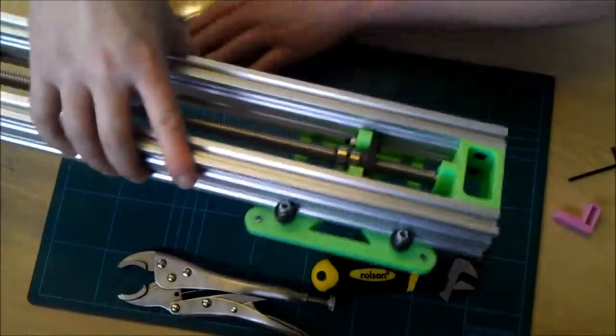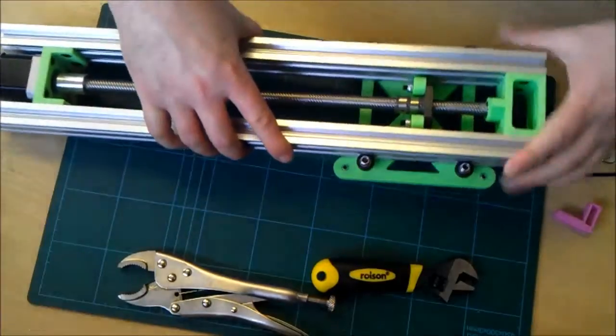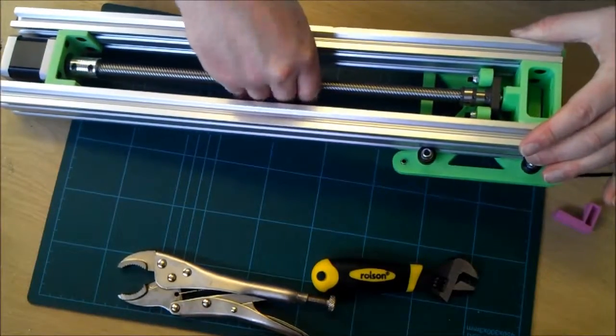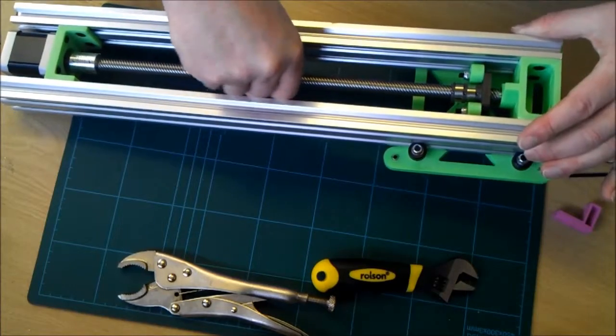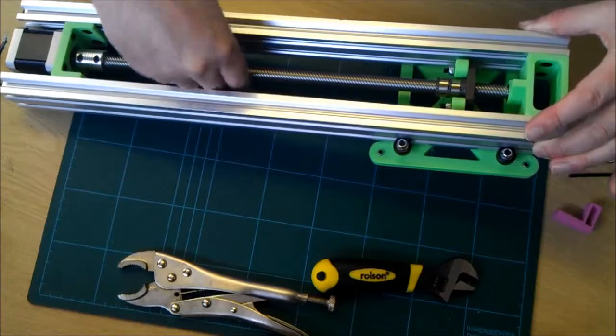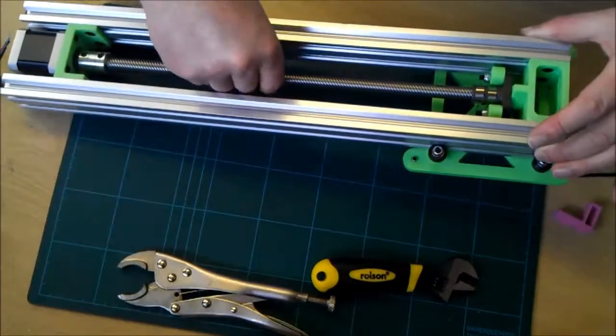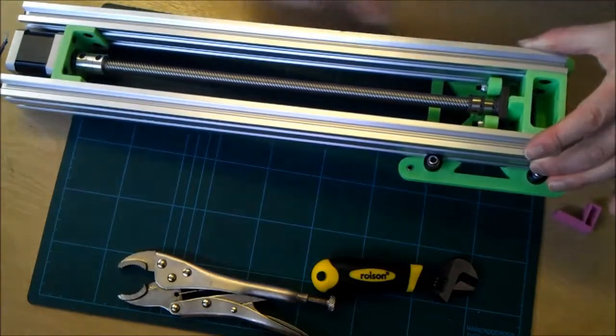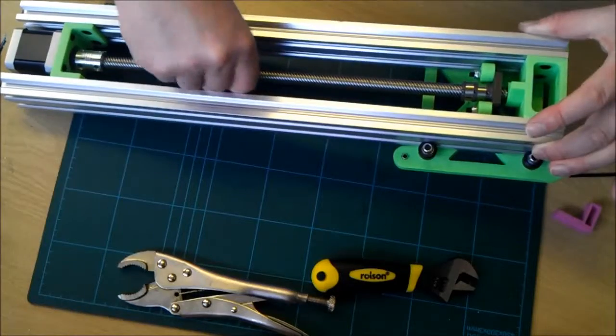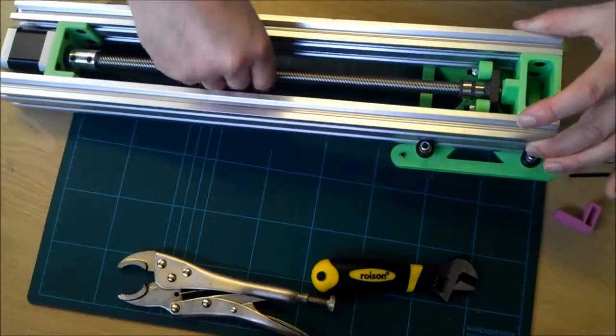They will take the Y carriage all the way down to the bearing. Screw down, make sure there's no snags and it's fairly even tension throughout.